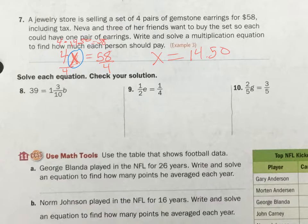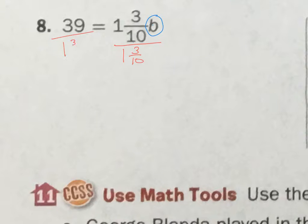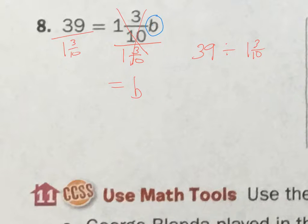Back to solving equations — number 8. I'm going to circle the variable b. It's 1 and 3 tenths times b. So I'm going to divide this by 1 and 3 tenths, and divide this by 1 and 3 tenths. This one just becomes 1, so it's b equals. Now I have 39 divided by 1 and 3 tenths. I'm going to make this into a fraction, and make 1 and 3 tenths into an improper fraction: 10 times 1 is 10, plus 3 is 13 — so this is 13 over 10. This is 39 over 1.